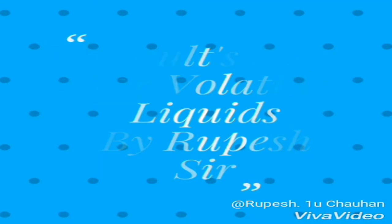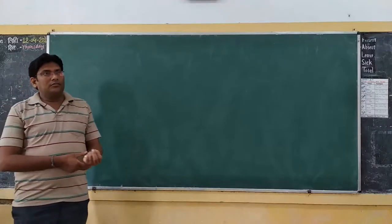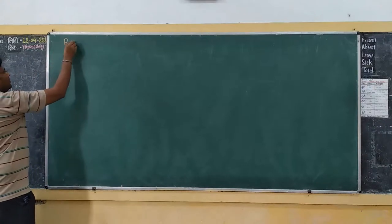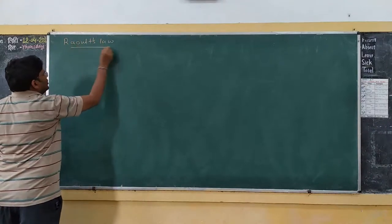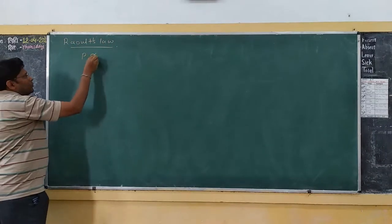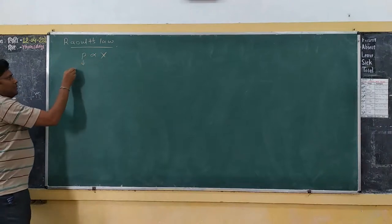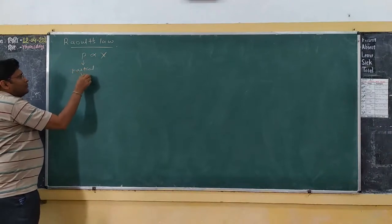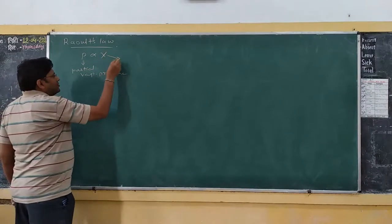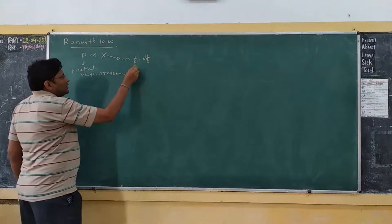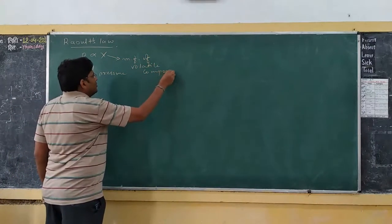We are discussing Raoult's Law for volatile solutions. In terms of Raoult's Law, we can express the formula as P is proportional to x, where P is the partial pressure and x is the mole fraction of the volatile component. Volatile means it evaporates easily.